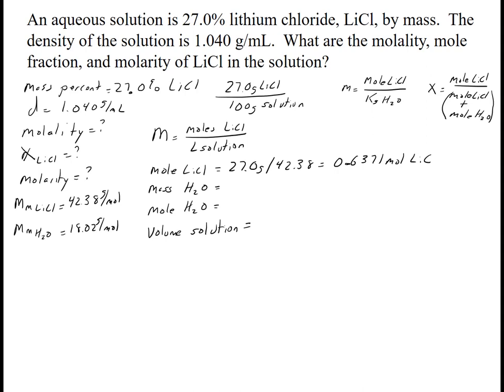For the mass of water, I have a mass of solution of 100 grams. The solution is always solute plus solvent, so I subtract the lithium chloride: 100 grams minus 27.0 grams equals 73.0 grams. I need it in kilograms, so I divide by 1000 to get 0.073 kilograms of water.